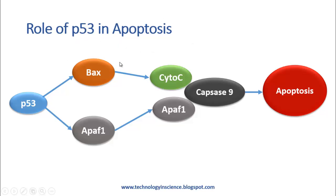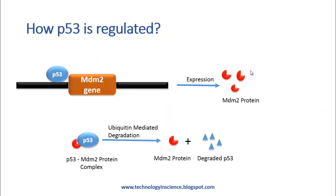When there is a higher amount of P53 produced inside the cell, it can trigger the expression of the BAX or APF1 gene product. BAX further produces cytochrome C. APF1 and cytochrome C together bind to caspase 9 and cause apoptosis of the cell, thereby the cell is degraded and the mutation does not proceed further.